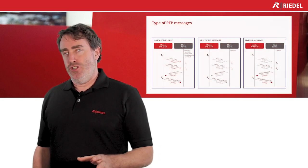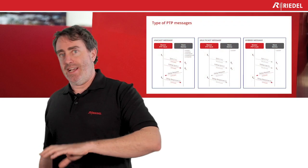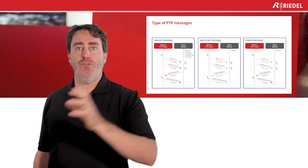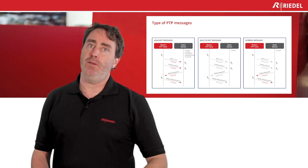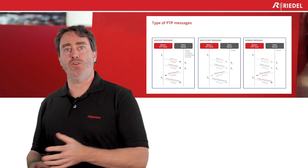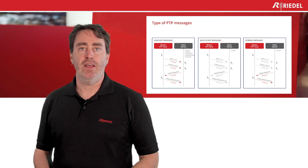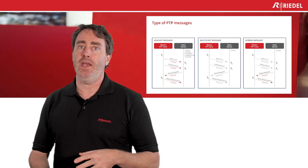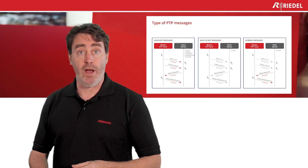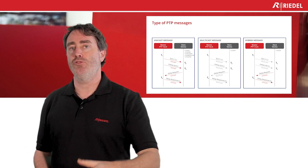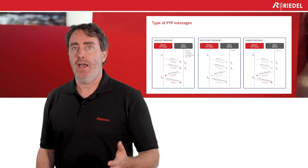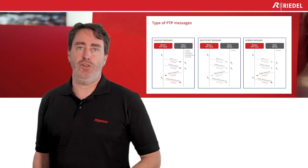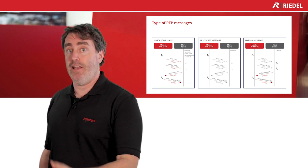In the case of the MeteorNet IP product this can be changed. So, types of messages: messages are exchanged from the grandmaster to the device itself and they can be multicast, unicast, or hybrid. All the exchange can be in multicast, exchange can be in unicast from one to one, or can be hybrid — meaning the sync is sent to multiple slaves and then the master receives a unicast reply from all those slave devices.